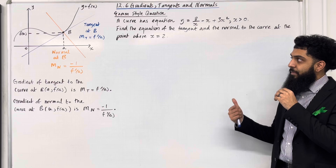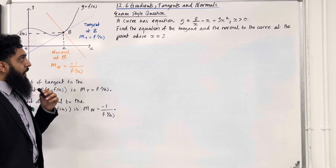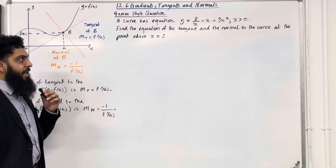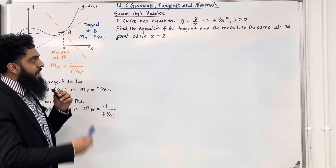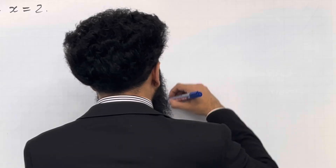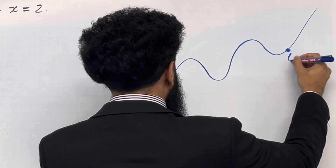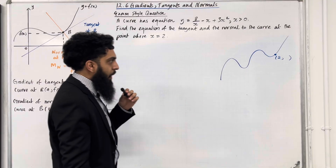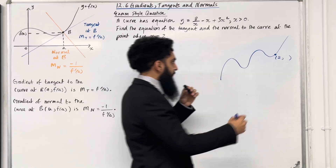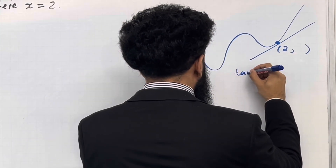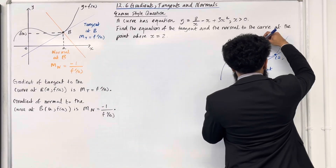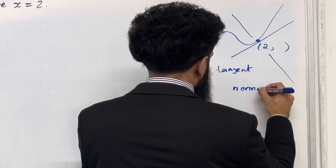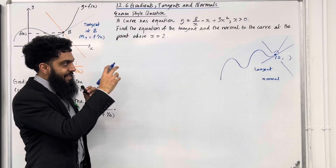I'll be implementing these key facts within this exam style question. A curve has equation y equal 8 over x minus x plus 3x squared, where x is greater than 0. Find the equation of the tangent and the normal to the curve at the point where x is equal to 2. I'm going to start by drawing a diagram. Here's a random curve representing the equation. Consider this point with x-coordinate 2. I'll draw the tangent to the curve at x equals 2, and the normal, which is perpendicular to the tangent.